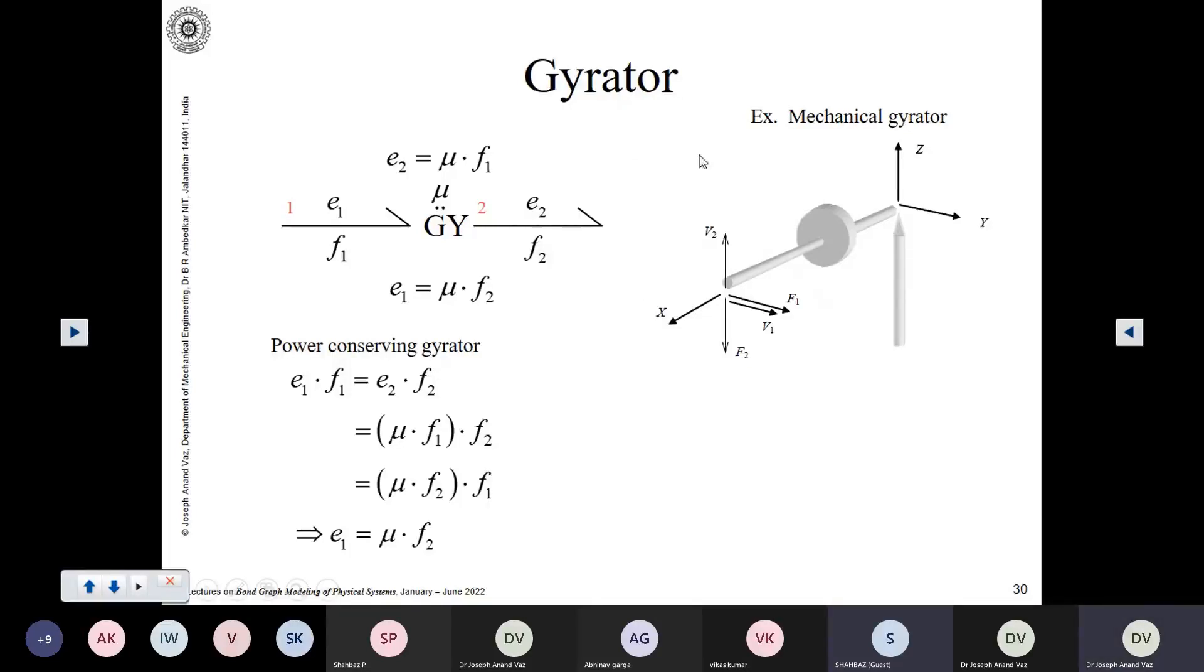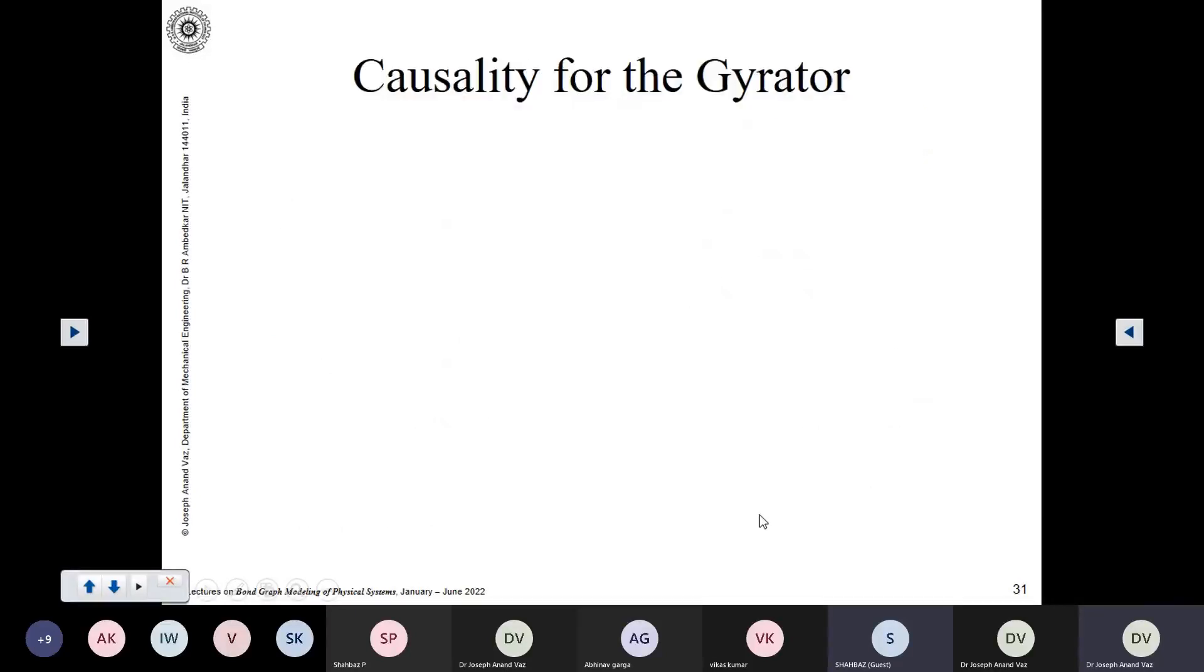So, this is about the gyrator, mechanical gyrator. Here, F2 is equal to mu V1, or F1 equal to mu V2. This is the relationship which is valid. And you can see, it is an effort to flow, or a flow to effort relation. So, you provide flow here, you get effort. Provide flow here, you get effort.